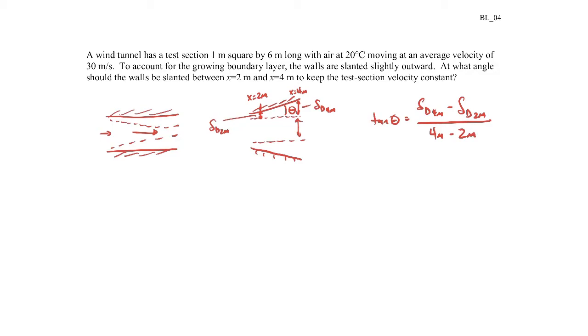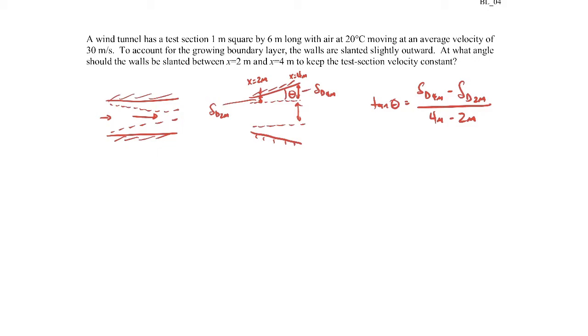In order to do that, we'll want to calculate the Reynolds number first. We want to know whether this is a laminar boundary layer or a turbulent boundary layer. So to find the Reynolds number based on the distance x from the leading edge where the boundary layer started, that'll just be the inviscid core velocity, capital U, that's the velocity we're given, 30 meters per second, times the distance x divided by the kinematic viscosity of air.